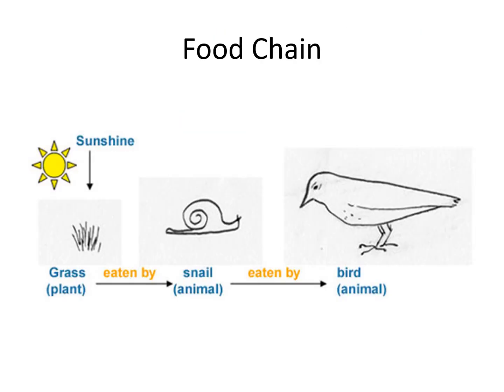Food chains are really important, and the key thing about food chains are the arrows. The arrows show the direction of energy flow. In this case, the energy is going from the sun to the grass, to the snail, to the bird. Make sure you draw the arrows correctly — drawing them backwards makes it look like the snail ate the bird, which is wrong. Remember, arrows go in the direction of energy flow.